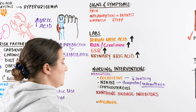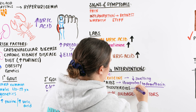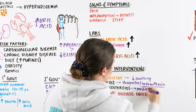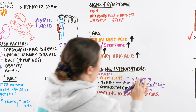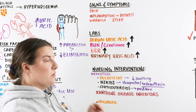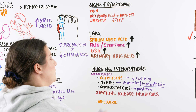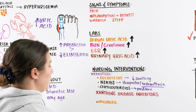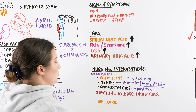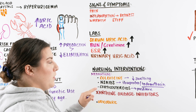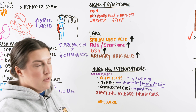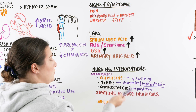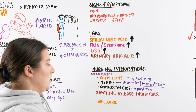We also have corticosteroids, such as prednisone. We can use these if the patient has issues taking ibuprofen or can't take NSAIDs. We'd give corticosteroids short-term, hopefully getting that gouty flare to come back down. If colchicine, NSAIDs, and corticosteroids are not working — for patients with extreme or chronic gout — we look into xanthine oxidase inhibitors.